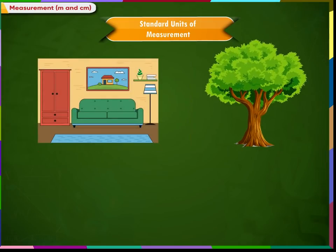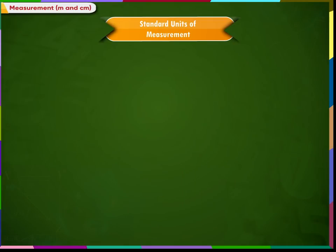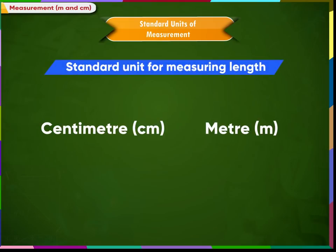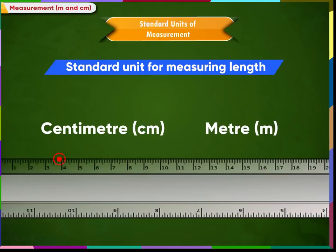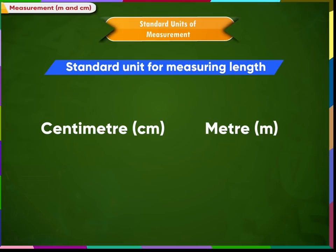The length of a room, height of a tree, length of cloth, height of an electric pole, etc. are slightly bigger lengths which are measured in meters. Meter is a unit which is used to measure even bigger lengths. In short, meter is written as m. The units centimeter and meter are used as standard units of measuring length. One meter is divided into hundred smaller units called centimeters, so one meter is equal to 100 centimeters.